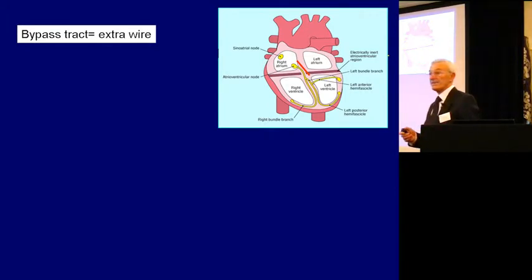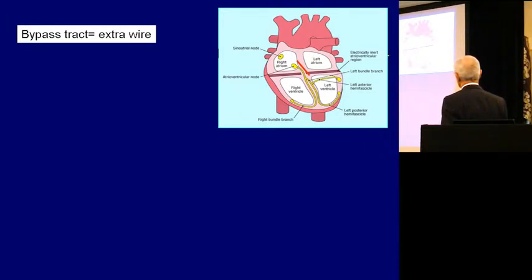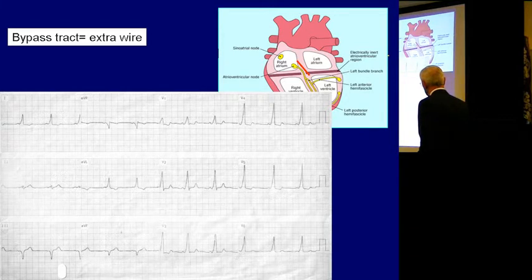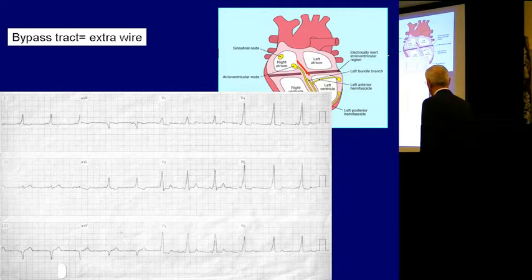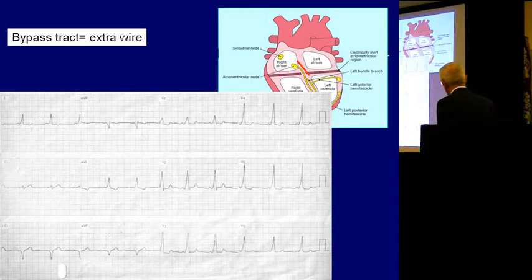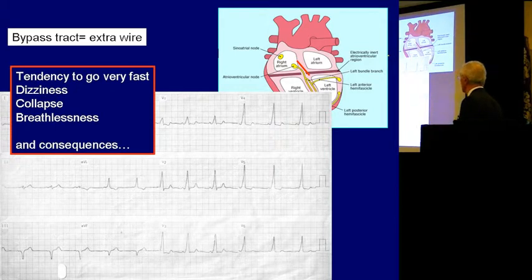Some people are lucky enough to have an extra wire when they're born. Instead of having the one wire joining the top of the heart to the bottom, they've got another one — a bypass tract. Now that can cause problems in itself because it alters the ECG. You'll see there's no gap between the told-to-beat and the beat, because the impulse has jumped around the regulator. The bit that goes through the bypass tract is slurred — instead of going straight up, it's slurred. And that can cause problems because your heart can go very, very fast.